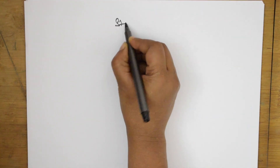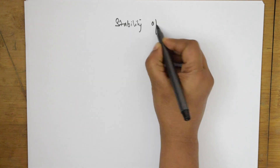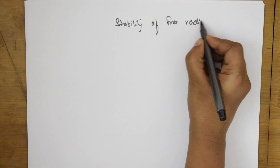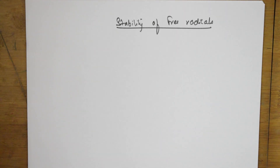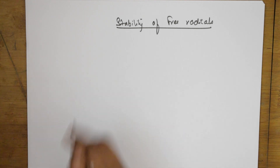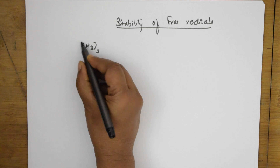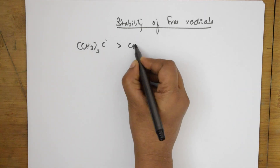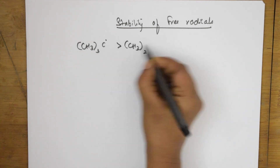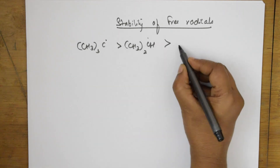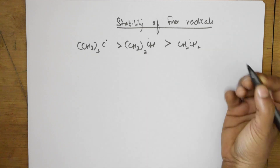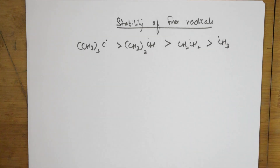How do we explain the stability of free radicals using the hyperconjugation concept? The stability of free radicals can be explained in the same way as carbonium ions. Tertiary free radicals have the greatest stability, greater than secondary free radicals, which is greater than primary free radicals, which is greater than methyl free radicals. The same concept applies, but here we are speaking about free radicals.